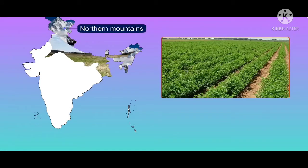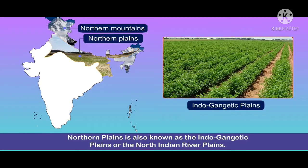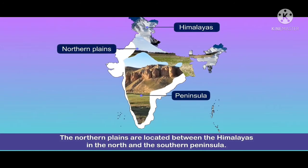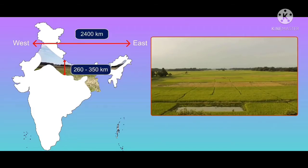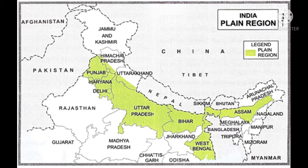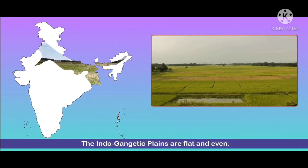Now let's talk about the location of the Northern Plains. The Northern Plains lie to the south of the Himalayan mountains, between the Himalayas in the north and the southern peninsula. The east-west extent of the plains is about 2,400 kilometres and they are about 150 to 300 kilometres wide. These plains cover the states of Punjab, Haryana, Uttar Pradesh, Bihar, West Bengal and parts of Assam. The Northern Plains are flat leveled land.